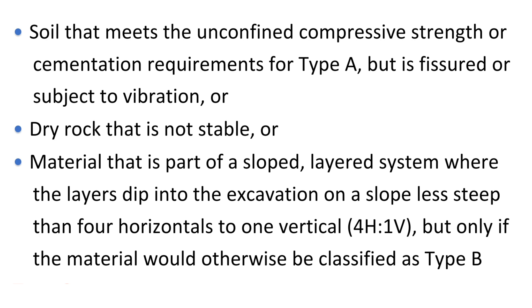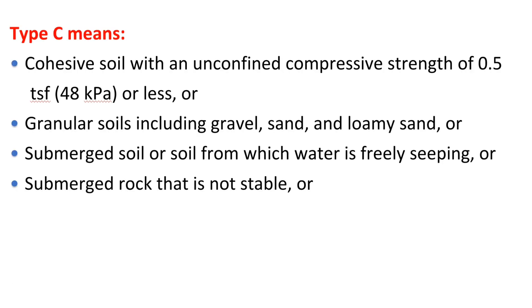Soil that meets the unconfined compressive strength or cementation requirements for Type A but is fissured or subject to vibration; or dry rock that is not stable; or material that is part of a sloped layered system where the layers dip into the excavation on a slope less steep than 4 horizontal to 1 vertical (4H:1V), but only if the material would otherwise be classified as Type B.